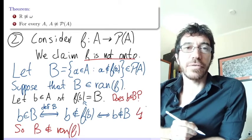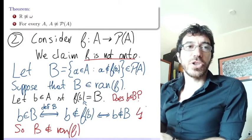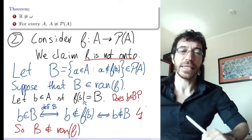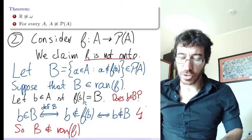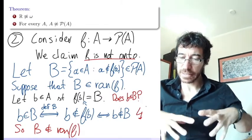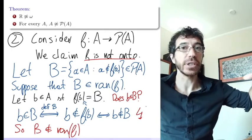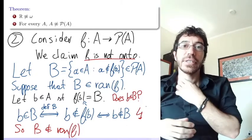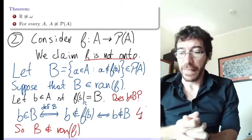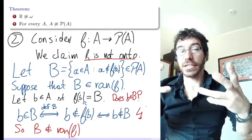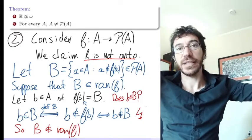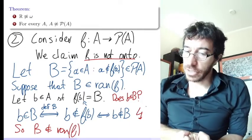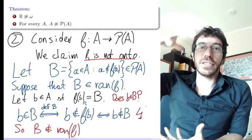So you can never have an onto function from a set to its power set. This gives us a way of building bigger and bigger sets: the natural numbers have a certain size, the reals have a larger size, the power set of the reals is larger still, and then the power set of that is larger, and so on — building a whole chain of different sizes, each one bigger than the previous.